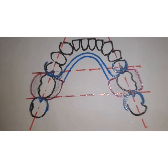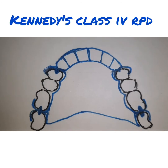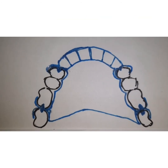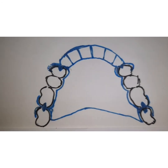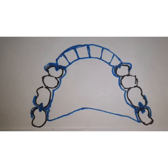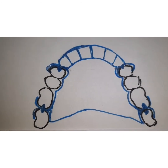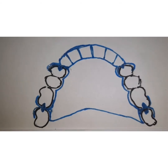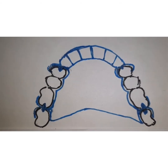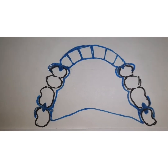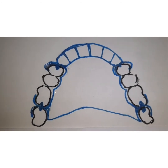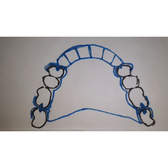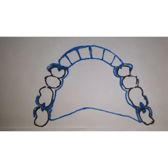Next we come to Kennedy's class 4 situation, which is an anterior edentulous space that crosses the midline. As you can see in the figure, the edentulous space crosses the midline. The longer the edentulous span, the greater the leverage forces on the partial denture, so we need to preserve as many teeth as possible, especially in the anterior region. The longer the span of the ridge, the more it resembles a distal extension situation rather than a class 3 situation.